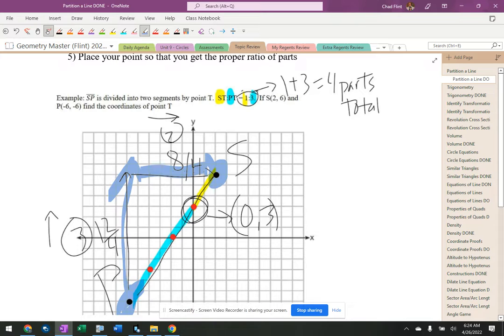There was four total parts because there was one part and three parts right here, one part and three parts, so that means four parts total. So I take the slope and I divide it by four. So I get three that direction, two that direction, and that's basically the new slope.